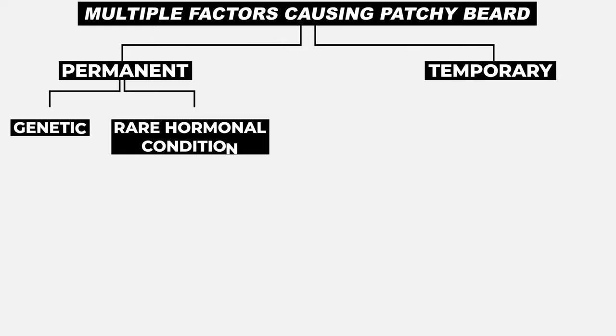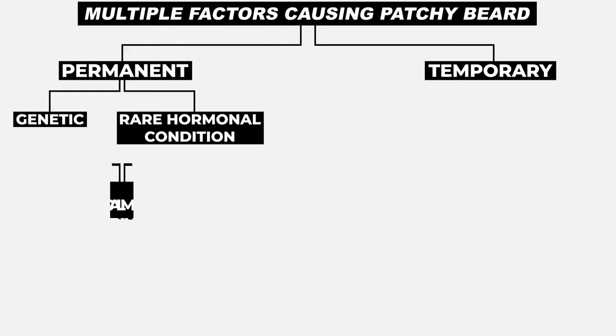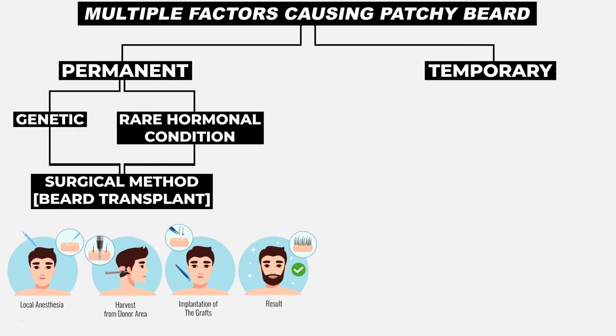Treatment for patchy beard depends on multiple factors — mainly whether the hair loss is permanent or temporary. In permanent hair loss, which is mainly due to genetics or rare hormonal conditions, the surgical solution is ideal: hair is taken from the back of the scalp and placed in the beard area in a natural fashion, giving permanent results.